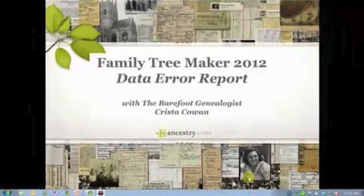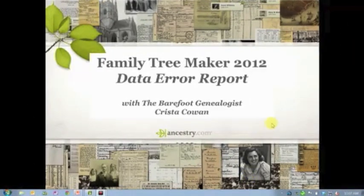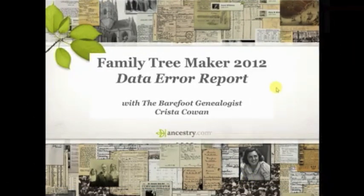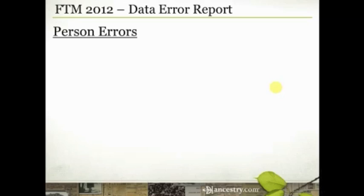Let's dive in. We're going to spend quite a bit of time on some slides here to make sure you can see exactly what is in this report before we jump over to Family Tree Maker and I show you how to find it, generate it, and what it looks like. There are a couple of sections in the Data Error Report — it allows you to generate a couple dozen kinds of error reports.